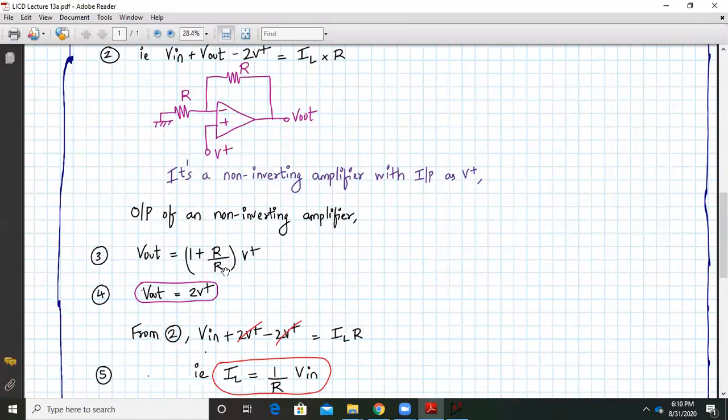What is the output of non-inverting amplifier? Output will be 1 plus R upon R into V plus. 1 plus R upon R that will be around 2. So V out will be equal to twice V plus.